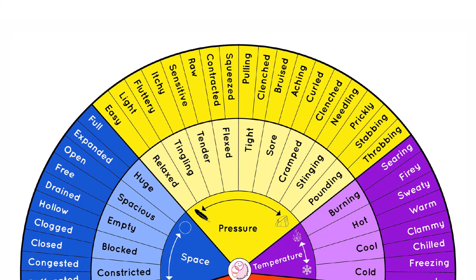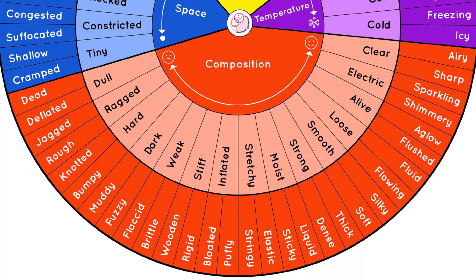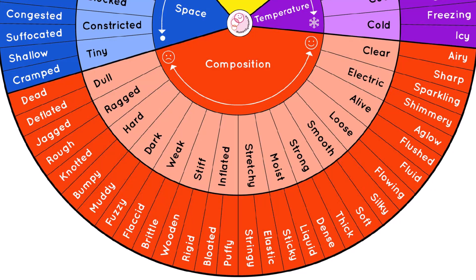This category also has a feather and stone to indicate where the heaviest words, such as pounding, and lightest words, such as fluttery, are. The temperature category includes words from searing to icy, with fire and snowflake icons placed to help users find the best word. The composition category has metaphors we use to communicate what we feel like our body is made of, such as electric, silky, wooden, and knotted. This category also has face emojis and arrows to indicate the placement of words on the pleasure-pain spectrum.